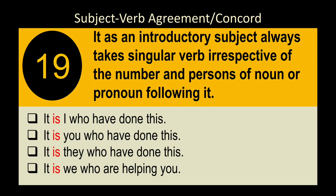Rule 21: 'It' as an introductory subject always takes a singular verb, irrespective of the number and person of the noun or pronoun following it. Examples: 'It is I,' 'It is you,' 'It is they,' 'It is we' — all are correct. 'I,' 'you,' 'they,' and 'we' do not affect the verb. 'It' takes 'is' (or 'was' in past tense).